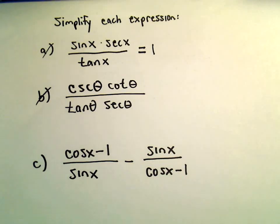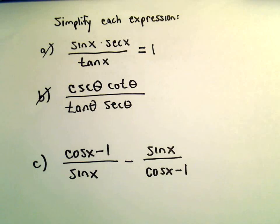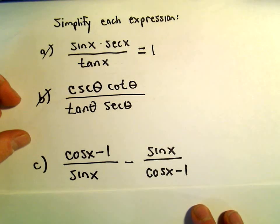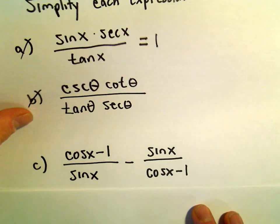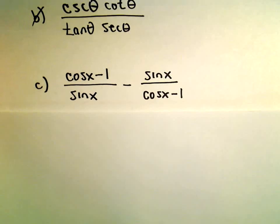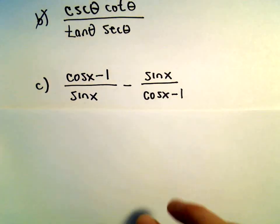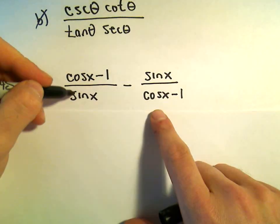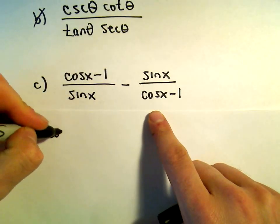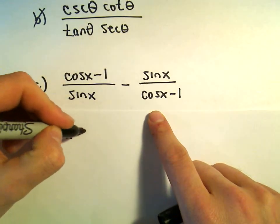Something like this isn't really immediately clear what to do. One thing to keep in mind: typically if you have two fractions, when you simplify things you'll want to have a single fraction. The only way to really get a single fraction is to have common denominators. So that's what I'm going to do — get common denominators and hopefully some things will simplify out a little bit.